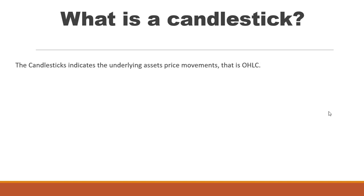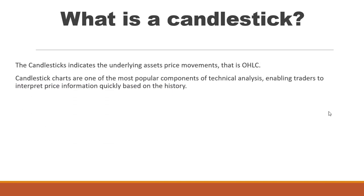The main topic is the reversal candlestick in support and resistance. The candlestick indicates the underlying asset price. What is the asset price? Asset is nothing but the stock — the stocks in the stock market like BEL, HAL, Maruti. These are the stocks. The OHLC is open, high, low, close — I will explain it in the candle. The candlestick charts are one of the most popular components of technical analysis.